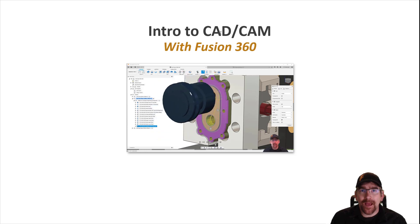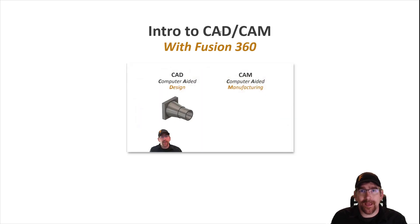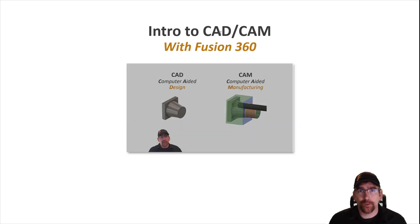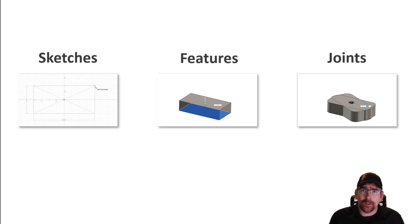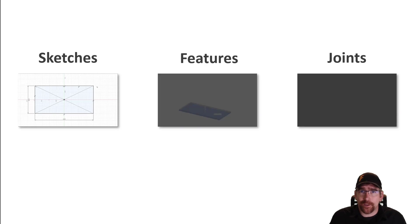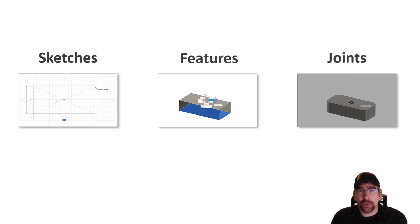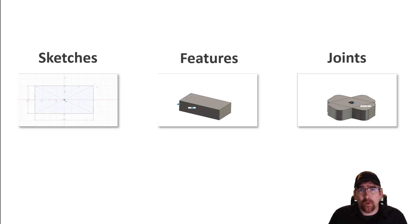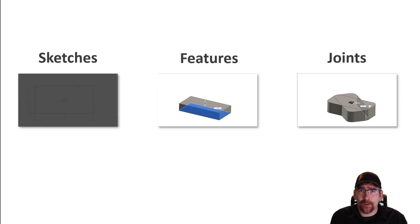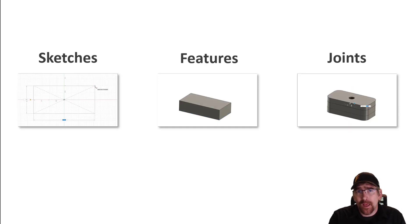Hey guys, welcome back. In the last video we covered the difference between CAD or computer aided design and CAM or computer aided manufacturing, and I walked you through how Fusion 360 fuses what was typically two solutions into one integrated solution. In this video we're going to take a closer look at the fundamentals of modeling: sketches, which are typically two-dimensional geometry; features, which take that 2D geometry and form 3D solids; and joints that join multiple components together and establish their position and motion.